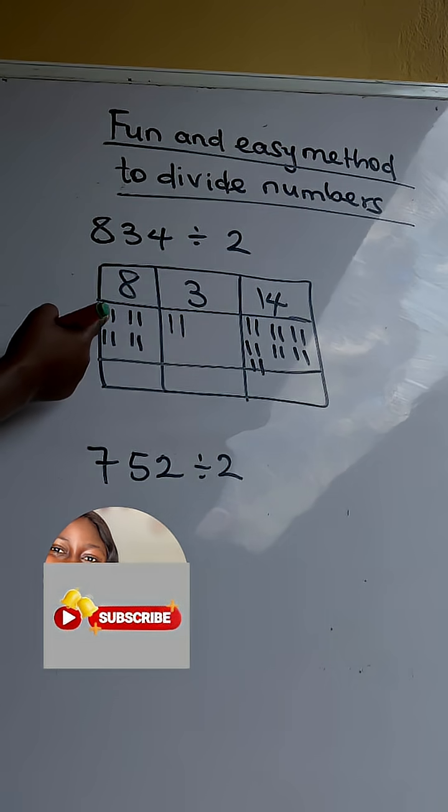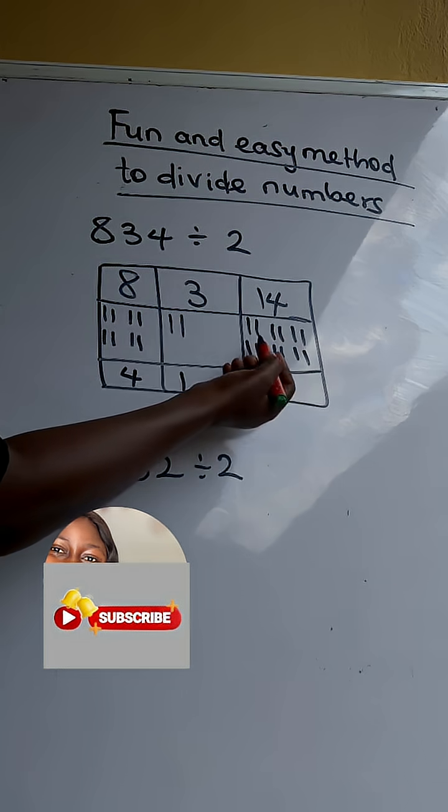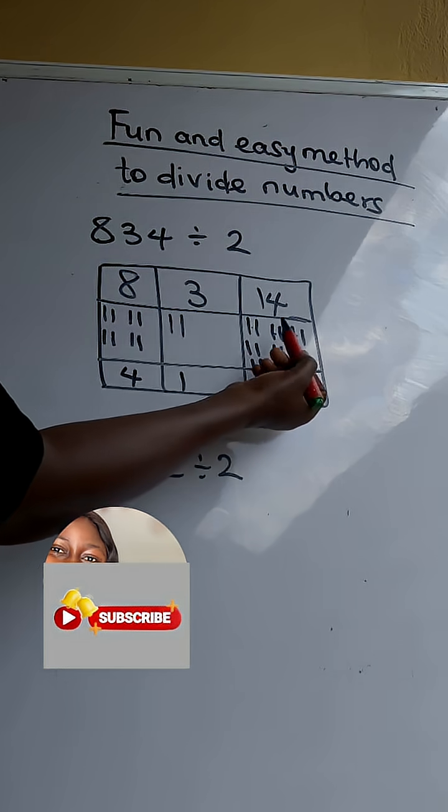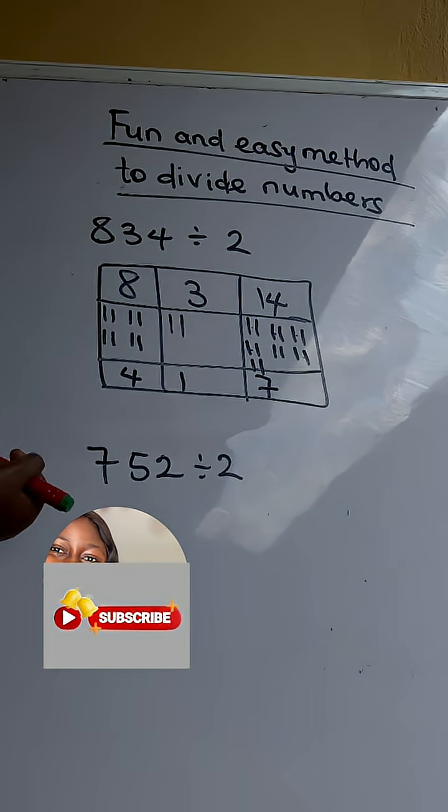So let's count. On that 8 we have 1, 2, 3, 4. Here we have just 1. Here we have 1, 2, 3, 4, 5, 6, 7. So this is a fun way to divide numbers.